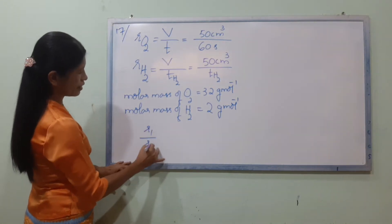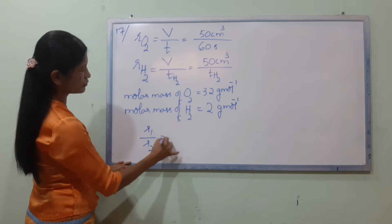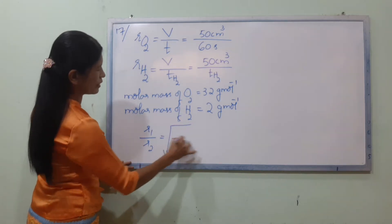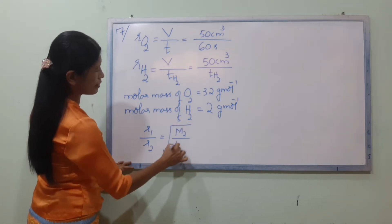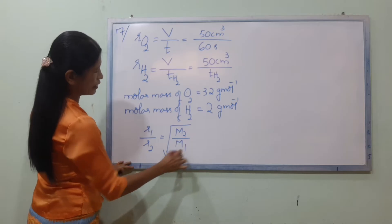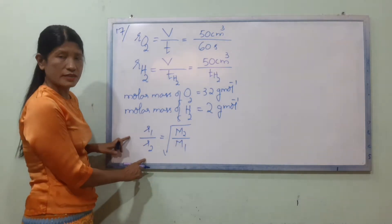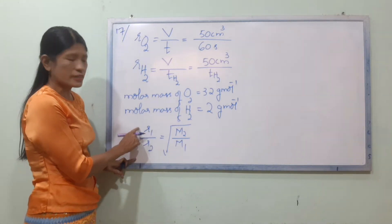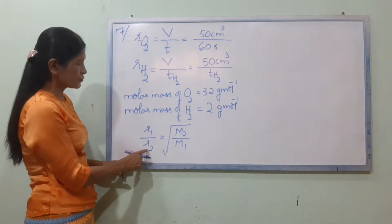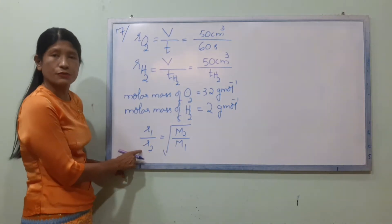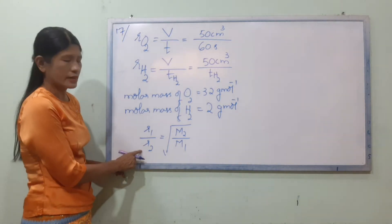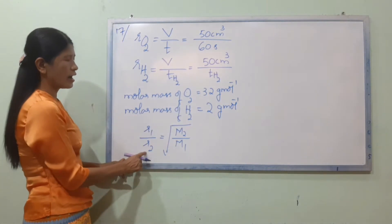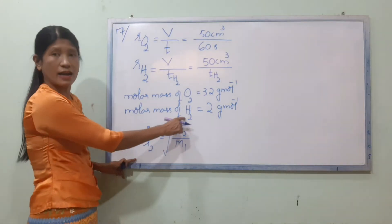We use Graham's Law: R1 by R2 equals the square root of M2 by M1. R1 is the rate of diffusion of oxygen, and R2 is the rate of diffusion of hydrogen.